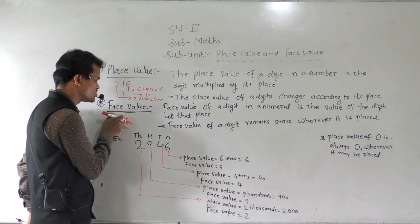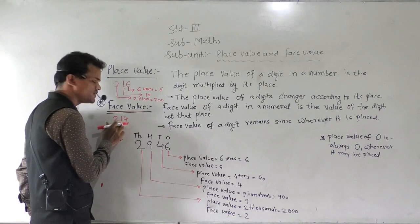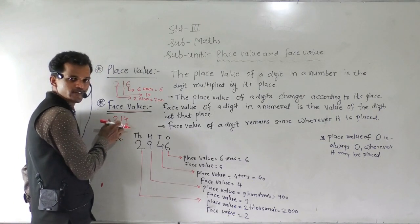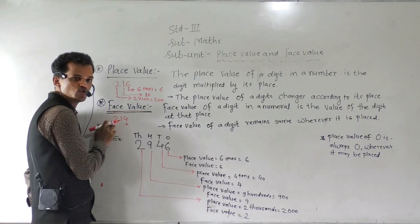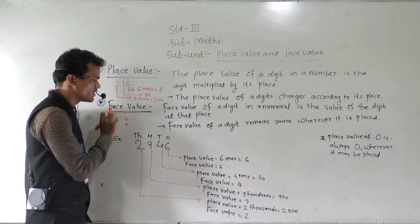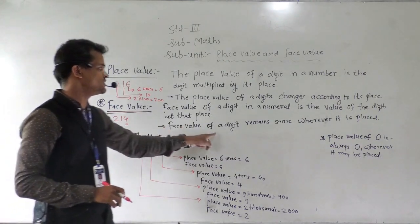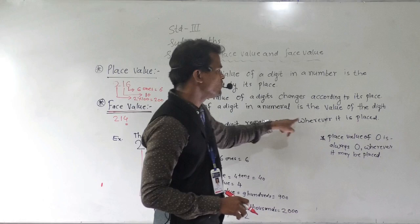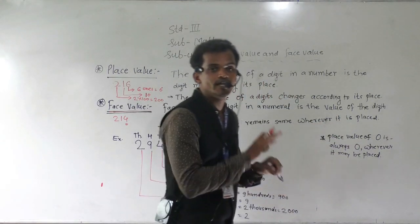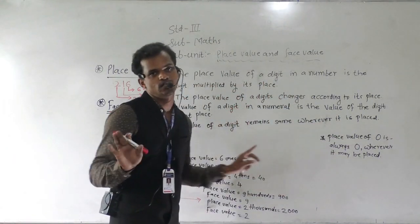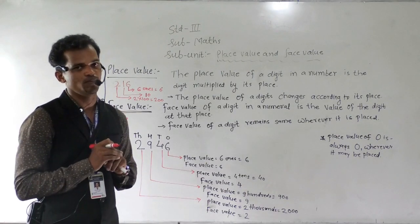Face value of this 4 is 4. Face value of this 1 is 1 — that number itself. And face value of this 2 is 2. So the face value of a digit remains the same; it does not change, it remains the same.